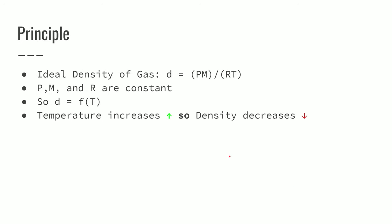Here's the ideal density of gas. You have your pressure, you have your mass of your gas, and then your gas constant, your temperature. These three are constant, so basically density is a function of temperature. When the temperature increases the density decreases and that will give you your buoyancy.